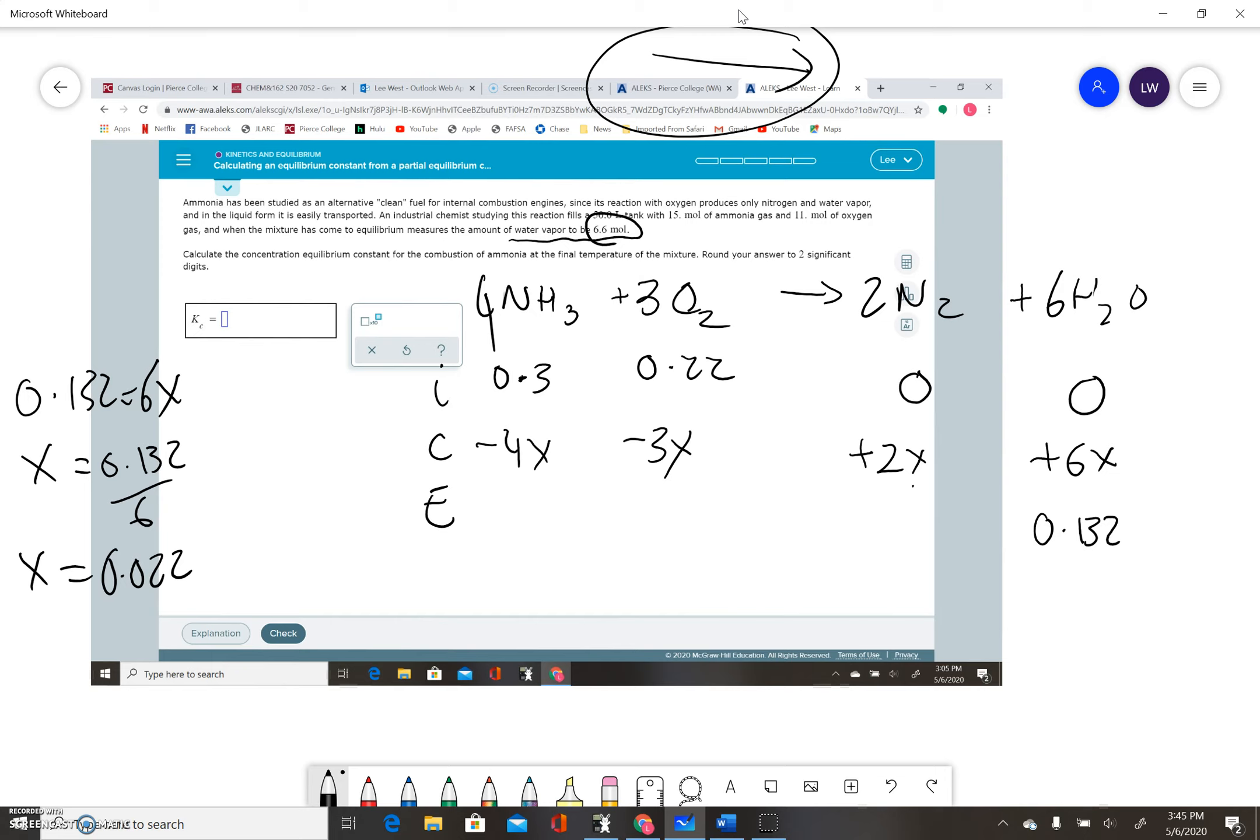The good thing about that is I can now update all of my equilibrium values. My equilibrium N2 is 2x, so that's just going to be 0.044. Then I've got 0.22 minus 3 times 0.022, which ends up being 0.154. Finally, I've got 0.3 minus 4 times 0.022, which ends up being 0.212.